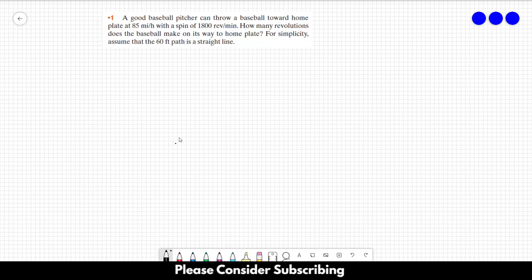Number 1. A good baseball pitcher can throw a baseball toward home plate at 85 miles per hour with a spin of 1800 revolutions per minute. How many revolutions does the baseball make on its way to home plate? For simplicity, assume that the 60 feet path is a straight line.